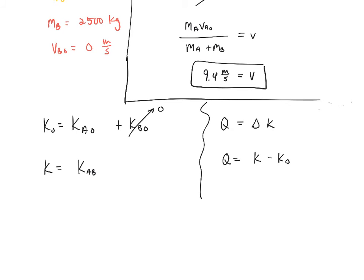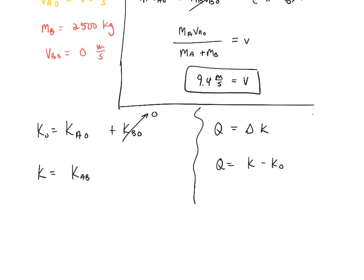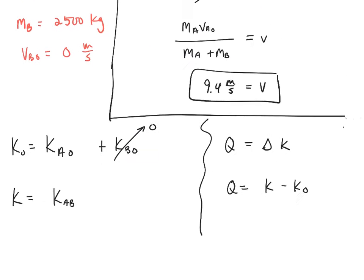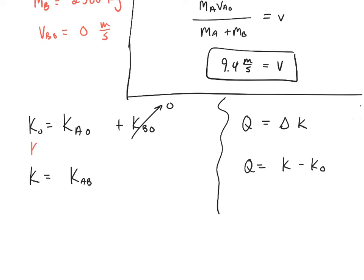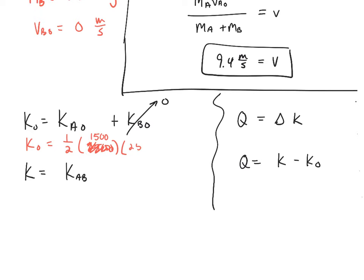KE_initially: only object A is moving with mass 1,500 and velocity 25. KE = (1/2)(1500)(25²) = 468,750 joules.